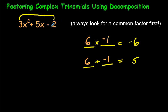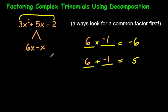Decomposition is when you break something down — specifically, we're breaking down this middle term into two other terms. Two things that add up to make 5x, which are 6 and negative 1. But you have to write them with the x. So it's 6x minus x — you could write 1x or just x; there's an invisible 1 there. So 6x minus x is actually 5x. Then we write down the rest: 3x squared plus 6x minus x minus 2.